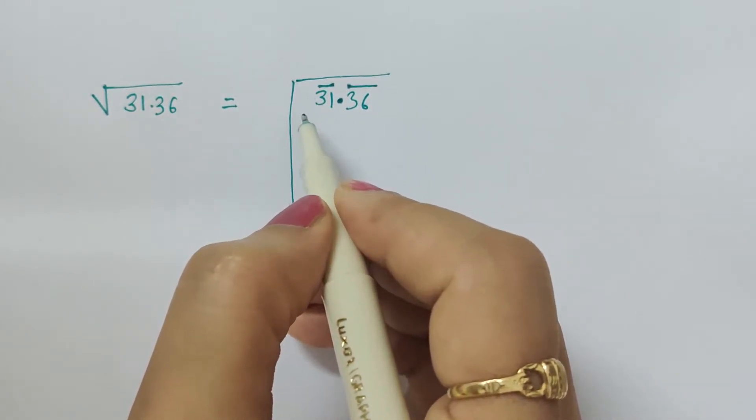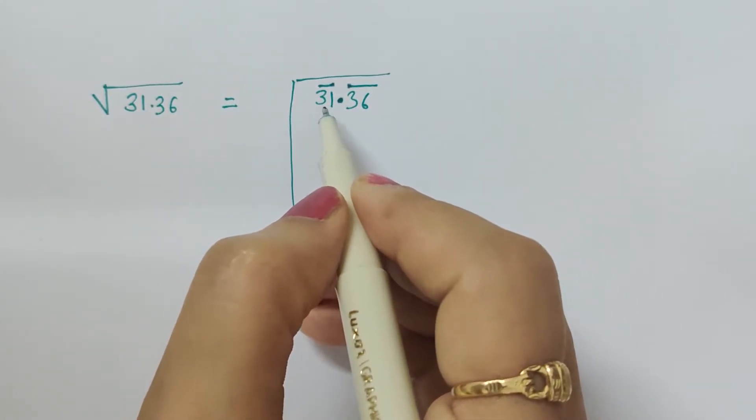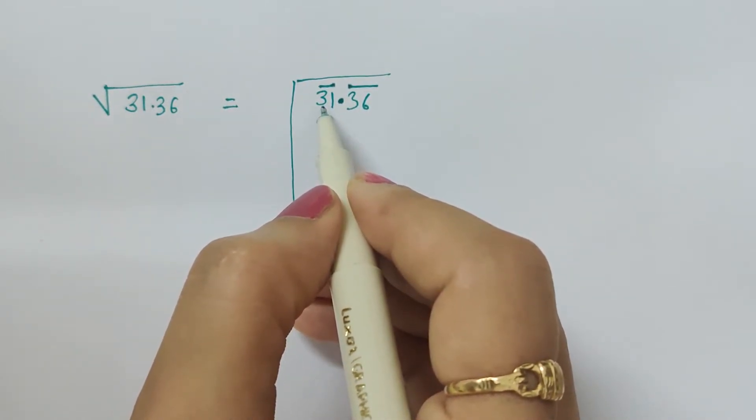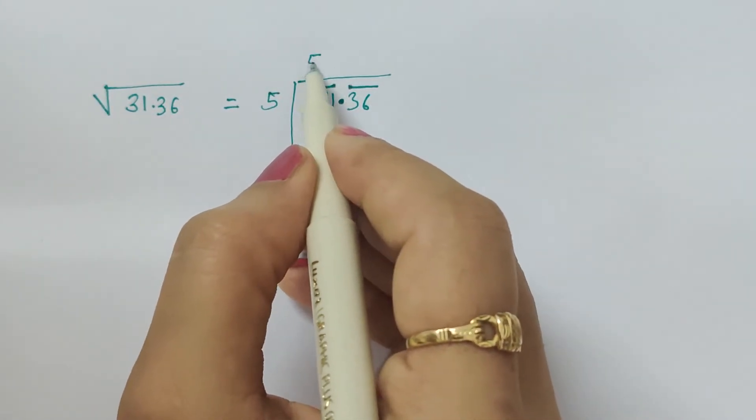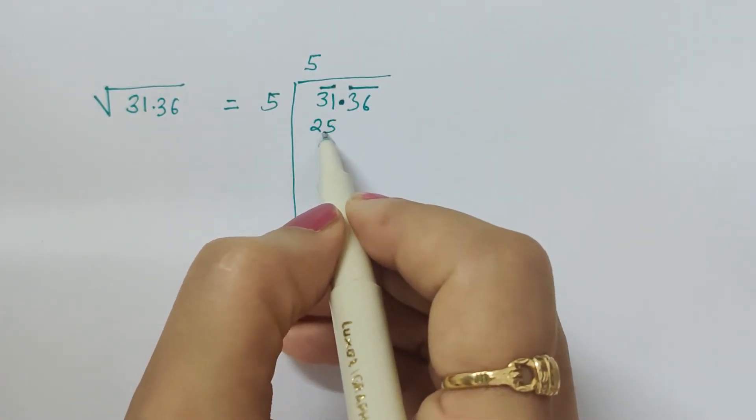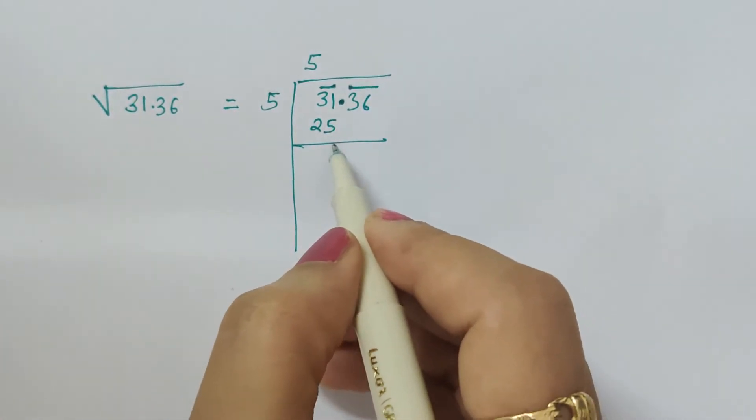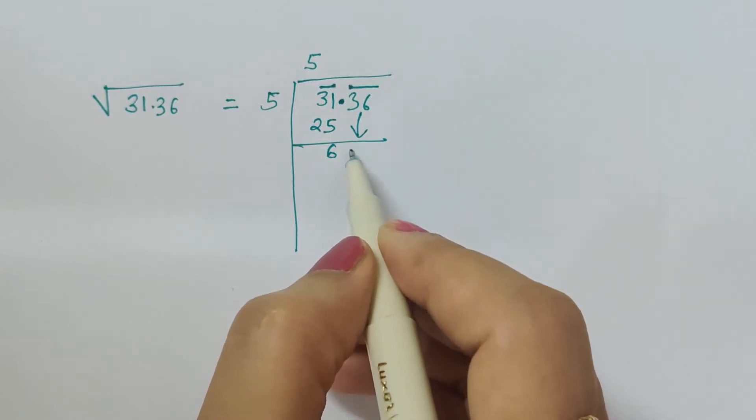From 3, but here from the end of the number we have to put the bar. Now the nearest multiple, 6 times 6 is 36, which exceeds 31, so 5 times 5 is 25. What is the remainder here? 6. Now this 36 will come together.